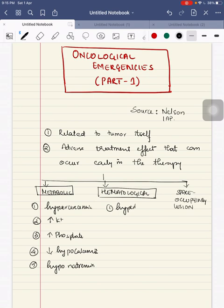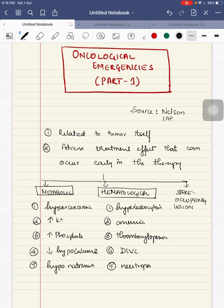Among hematological, we have hyperleukocytosis, second anemia, third thrombocytopenia, fourth DIC and fifth neutropenia.